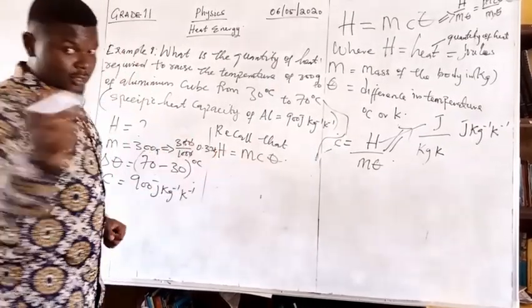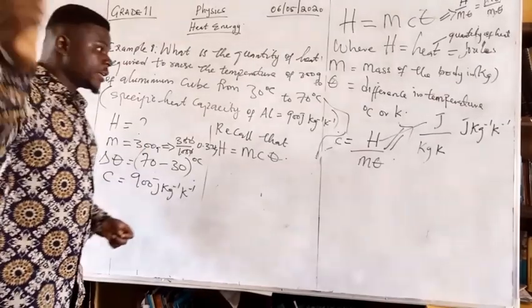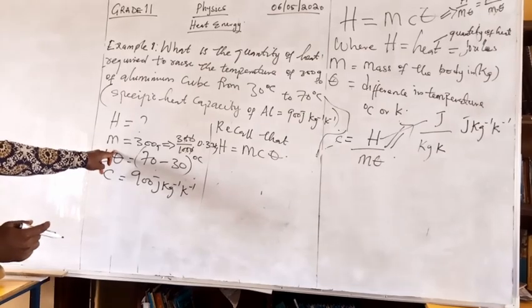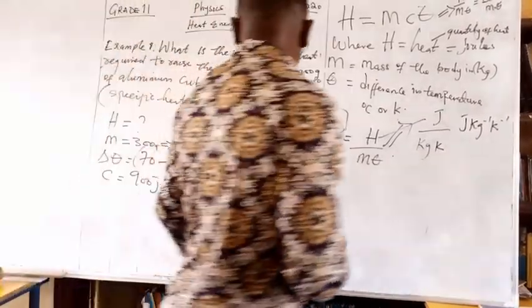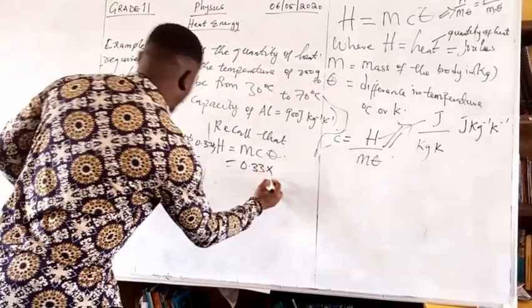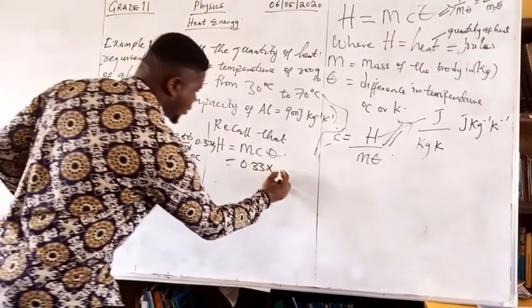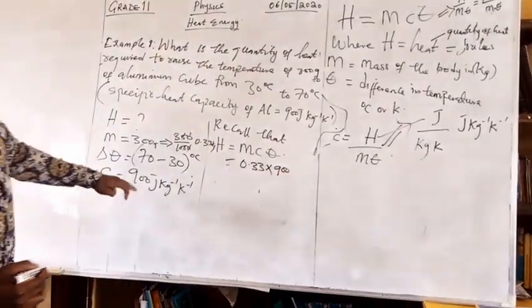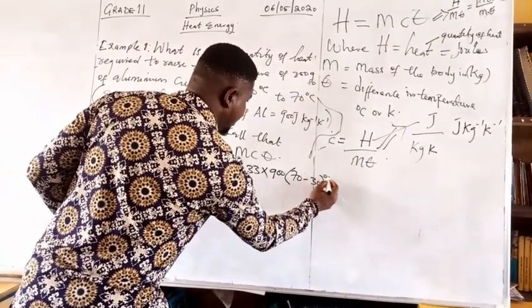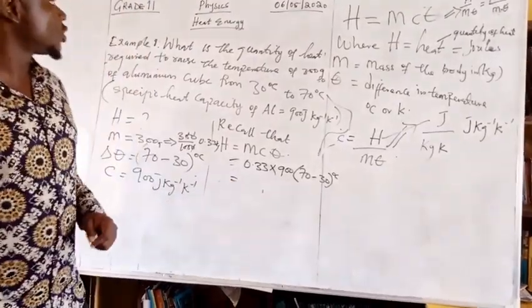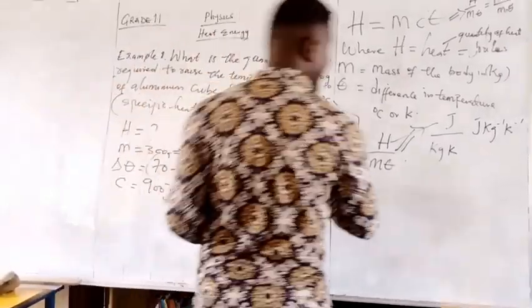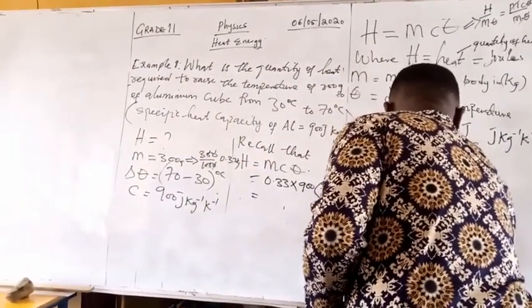I can plug in the values: my mass is 0.3, the specific capacity of aluminum is 900, and the change in temperature is 70 minus 30 degrees Celsius. I have 0.3 times 900 times 40.